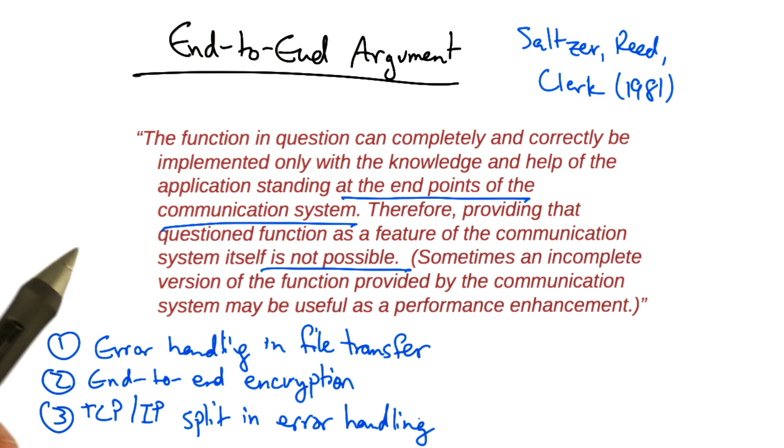Commonly used examples of the end-to-end argument include error handling and file transfer, encrypting end-to-end versus hop by hop in the network, and the partition of TCP and IP of error handling, flow control, and congestion control.